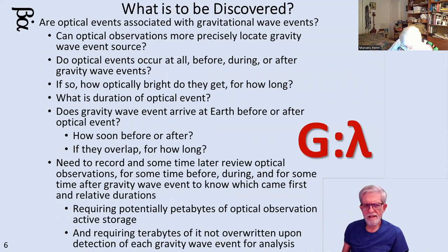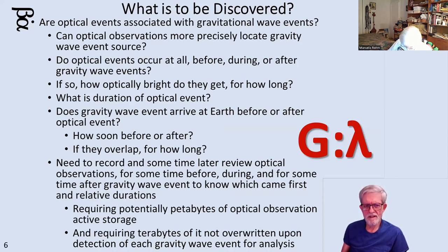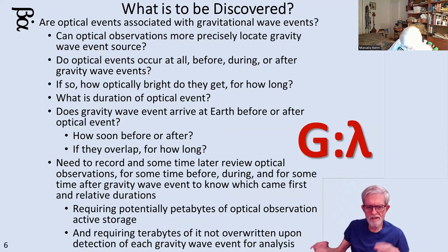So why would they want to correlate these two observations? Can an optical observation more precisely locate the source of the gravity wave event? Do optical events happen at all in correlation with gravity waves — maybe they only involve energetic stuff. If they are optical, is there a brightness curve? Do they start out dim, get brighter, then dim down? What's the overlap with the gravity wave event? How bright do they get, how long will they last? And then there's the ordering — the old chicken and egg: which came first, the gravity wave event or the optical event?